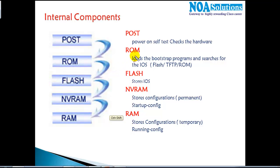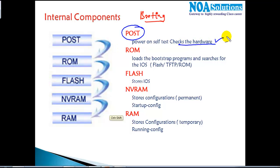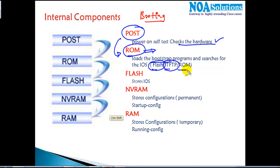Now let's understand the booting process — what happens when you power on the router. The first thing the router does is perform a POST — Power-On Self Test — which checks all hardware components, similar to computers. Then it goes to the ROM chip on the motherboard, checks the bootstrap program, and determines from where to load the operating system — whether from Flash or from a TFTP server.